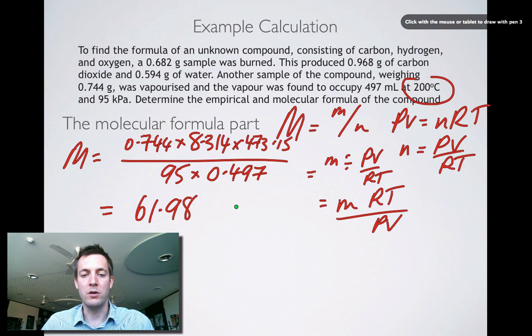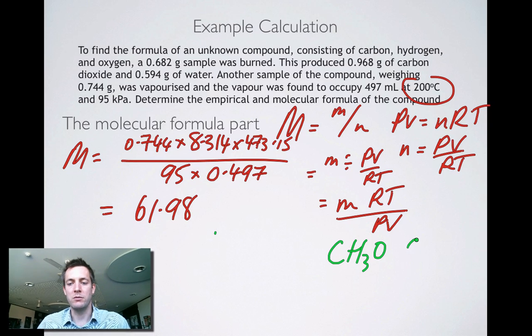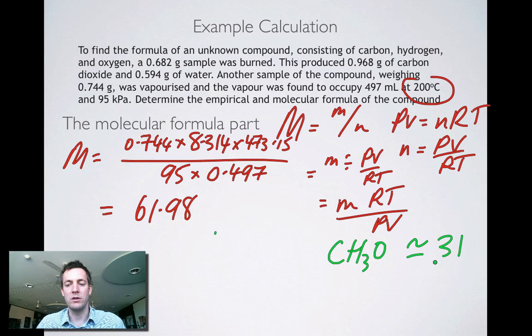Now remember, our empirical formula was CH3O. That has a mass of 12 plus 3 plus 16, which is about 31, to the nearest whole number. This thing here, divided by 31, is roughly equal to 2. So our molecular formula must be twice as big as our empirical formula. So it must be C2H6O2.